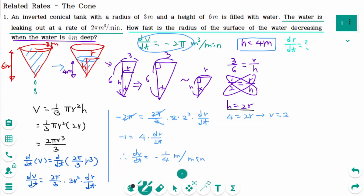That means the radius of the surface of the water is decreasing at a rate of 1/4 meter per minute.